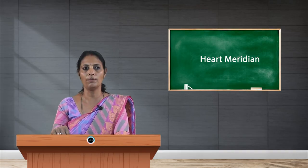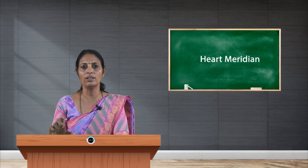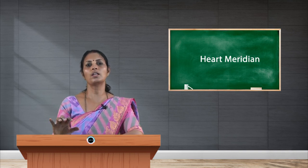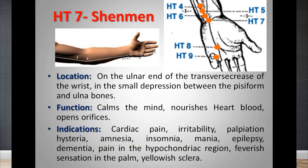Heart 7, Shenmen, is one of the most important and potent tranquilizing points — a very important sedative point also used in insomnia. Location: just proximal to the posterior border of the pisiform bone, or at the medial end of the transverse wrist crease. In cases of insomnia, depression, and anxiety, this point should be selected.